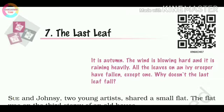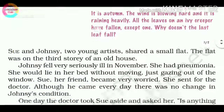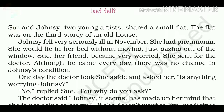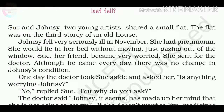Why is the last leaf not falling down? The chapter starts with two people's names. Sue and Johnsy, two young artists, shared a small flat. The flat was on the third story of an old house. Johnsy fell very seriously ill in November - she had pneumonia. She would lie in her bed without moving, just gazing out of the window. Sue, her friend, became very worried and sent for the doctor.